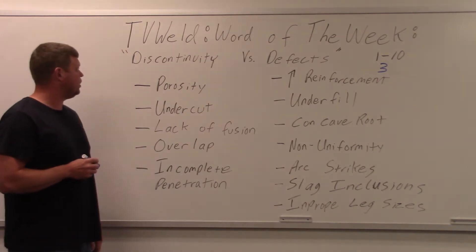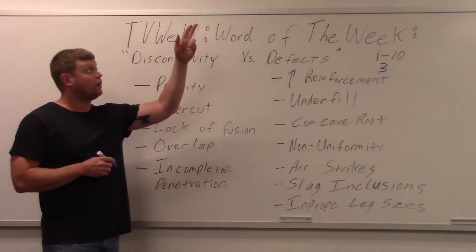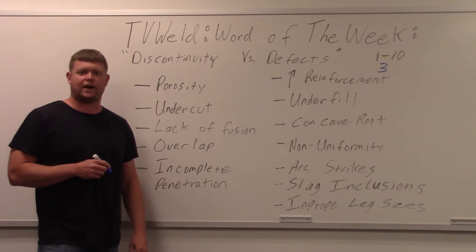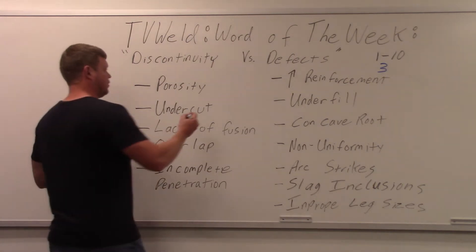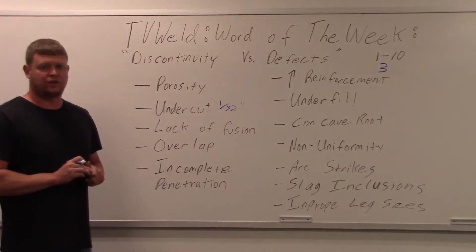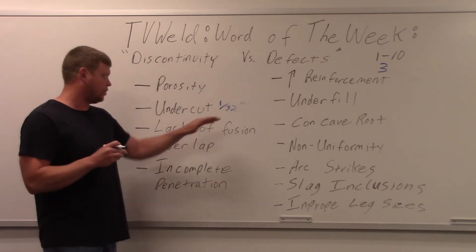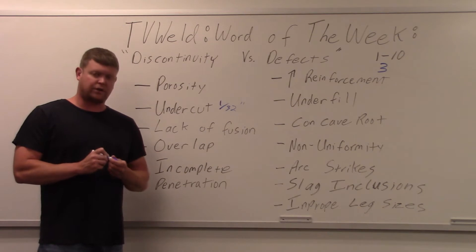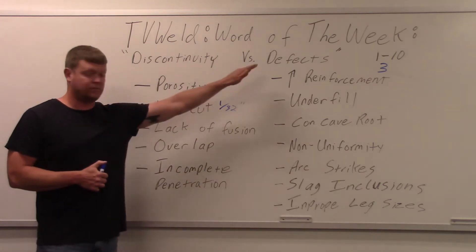Starting with porosity — I did a video on the parameters for how much porosity you can have, check that out for the exact parameters. For undercut, you're usually allowed around 1/32 of an inch depending on the code. If you have less than 1/32 of an inch of undercut, it's just a discontinuity. If you go over 1/32 of an inch, it becomes a defect.